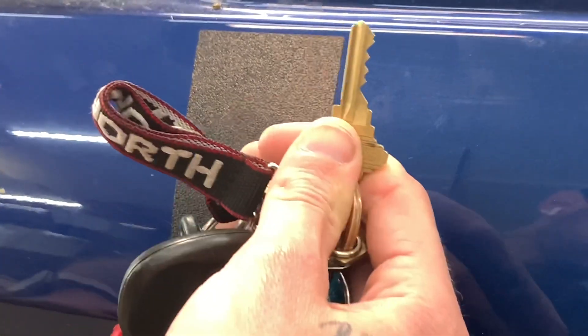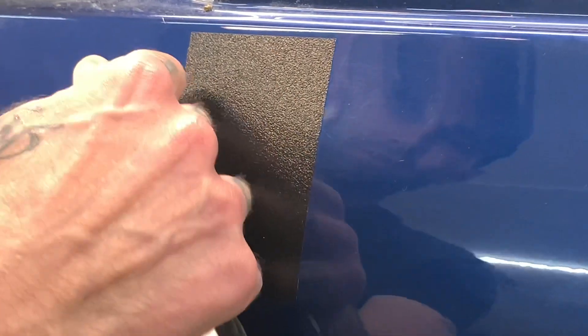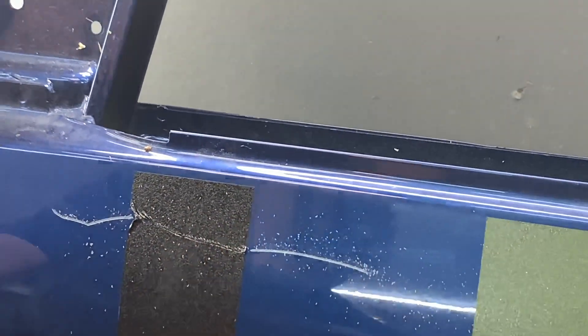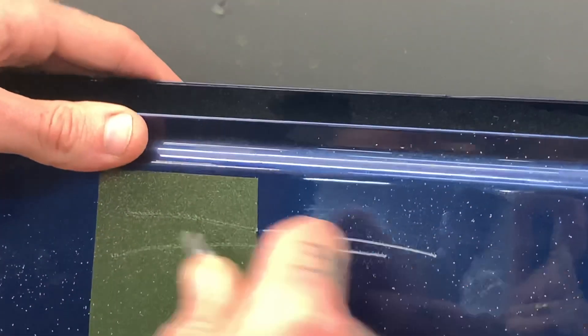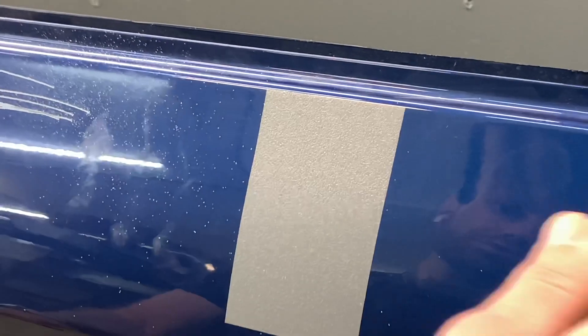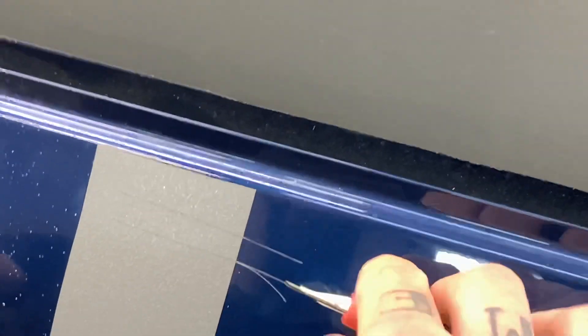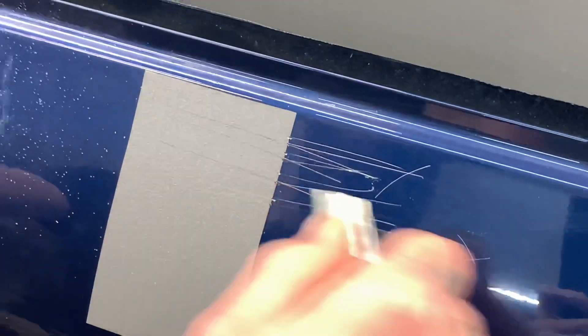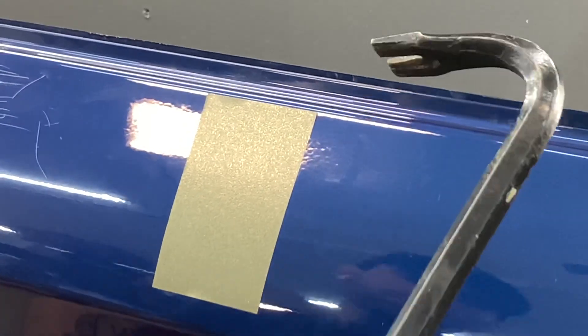Alright, so first up is the key. Second up, we have a flathead screwdriver. Third, we have our utility knife. I'll go straight on and scratch it across. So last but not least, we have the mini crowbar.